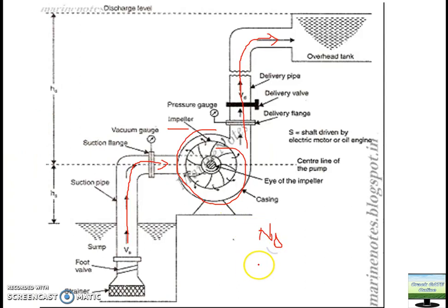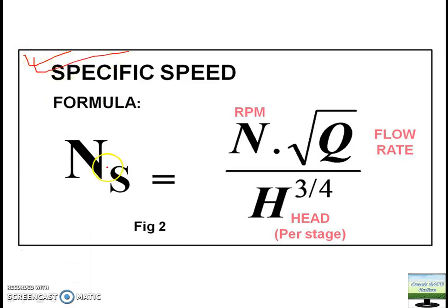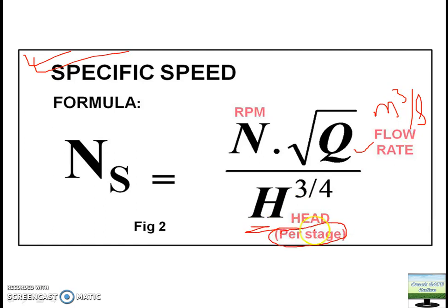In the centrifugal pump you need to understand two concepts: first is the concept of specific speed, and second is the affinity law. For specific speed, remember this formula: Ns = N√Q / H^(3/4), where Q is the flow rate in cubic meters per second, H is the head per stage in meters, and N is the RPM of the pump.